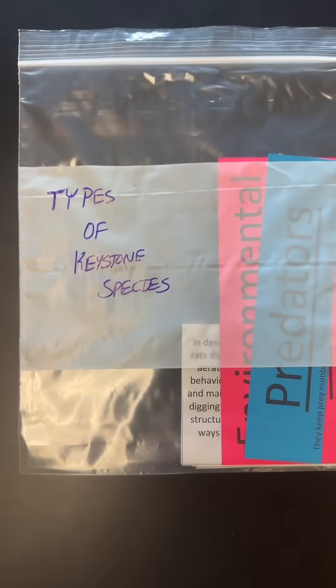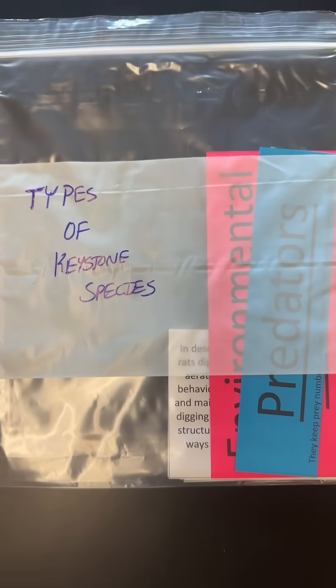On the other side of my classroom, I have a different organizer. This organizer is going to go over the different types of keystone species. Now, I didn't specifically go over this content in my lectures — I just went over the topic of keystone species. But we did go over this in a case study I did yesterday, so I wanted to show the students more examples of each different type of keystone species.